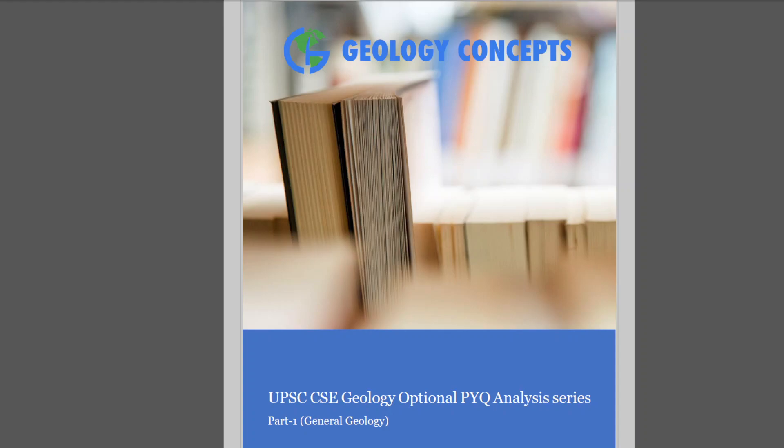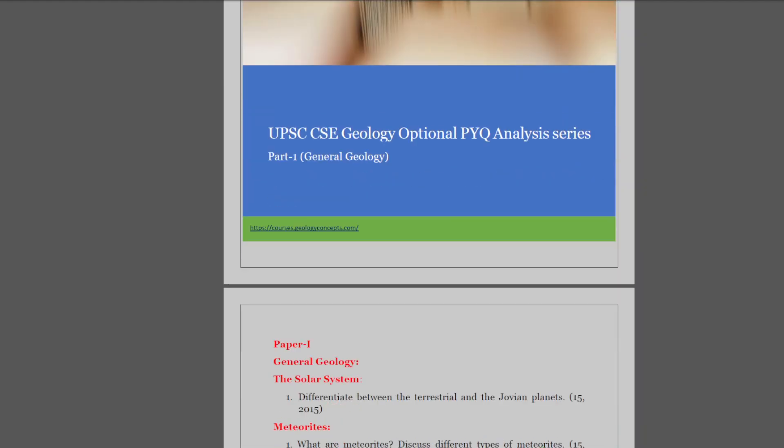So basically there are two papers in geology optional, having six topics each, that means 12 topics in total. We will go through them one by one. Today we will be analyzing questions from the general geology chapter as per the syllabus.